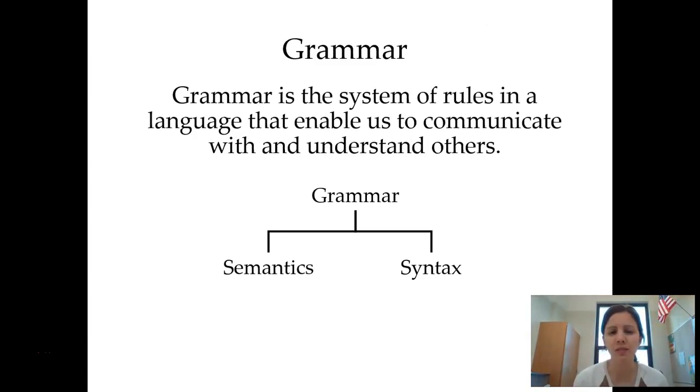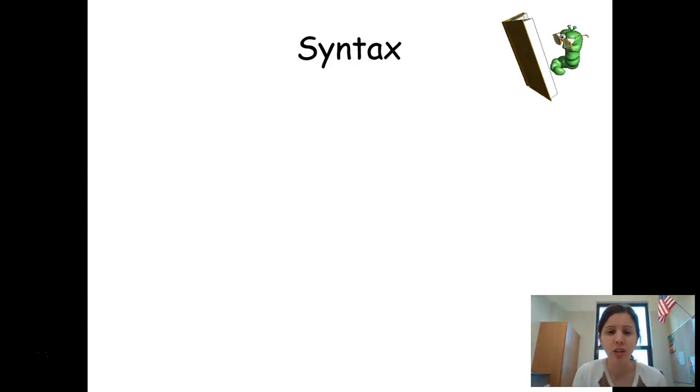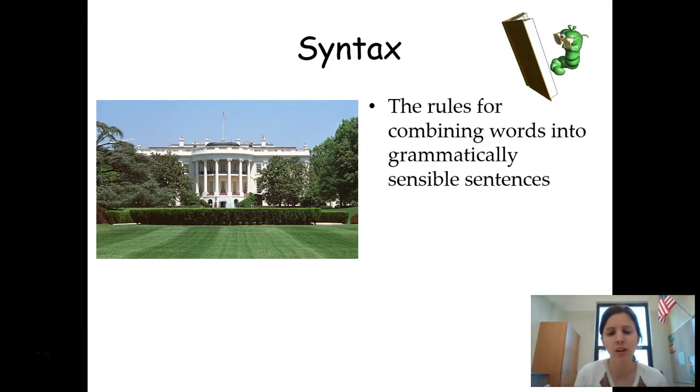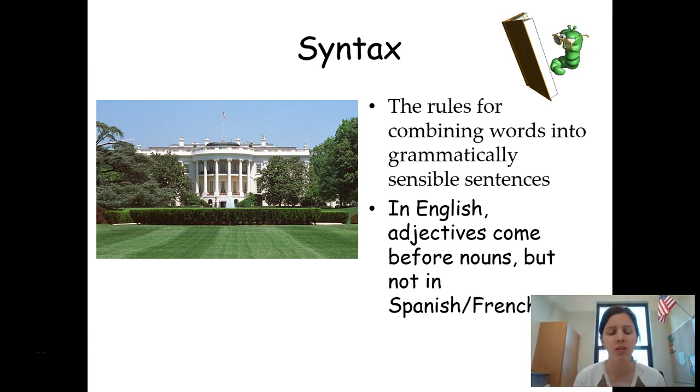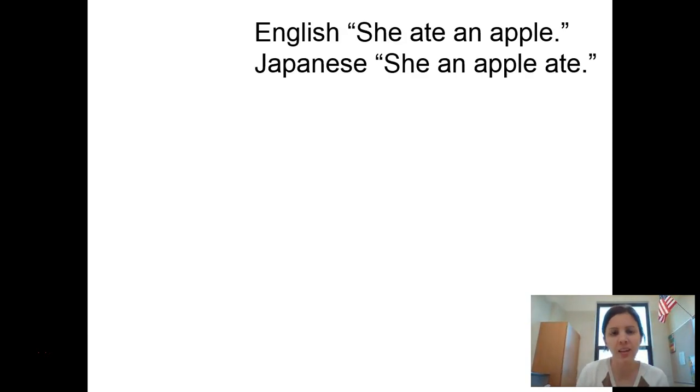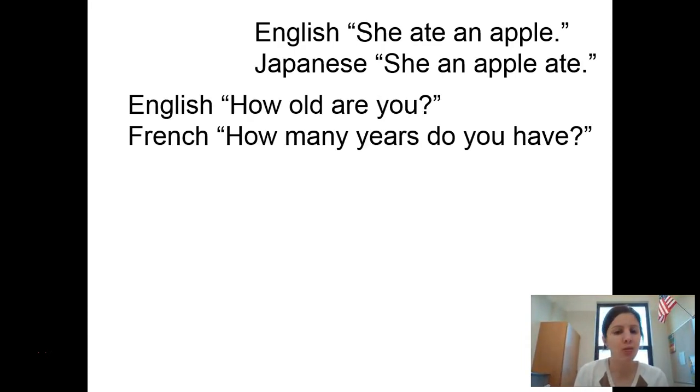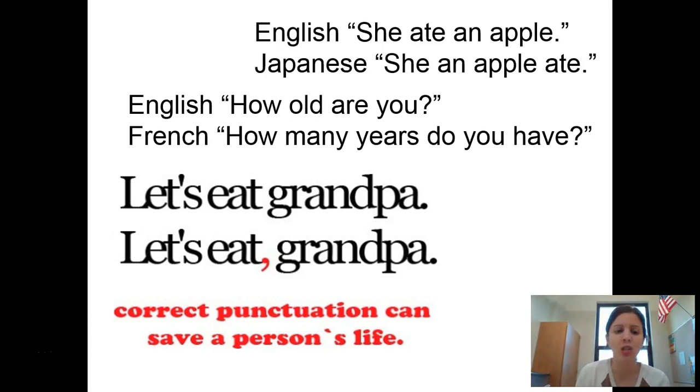We also need to make sure that we can tell the difference between semantics and syntax within a language. And so let's start with syntax. Syntax is just the rules for how we make grammatically correct sentences. So for example, in English, we put our adjectives before our nouns. So we say that this is the White House. But in French and Spanish and most other languages, the adjectives actually come after the noun. So they would say that this is the House White, which those of you in Spanish I'm sure that that is familiar to you. Here are some other examples of syntax. In English, we would say she ate an apple. But in Japanese, they say she and apple ate. In English, we say how old are you? In French, they say how many years do you have? And then finally, syntax also involves punctuation. So making sure that you correctly place commas is also important as well.